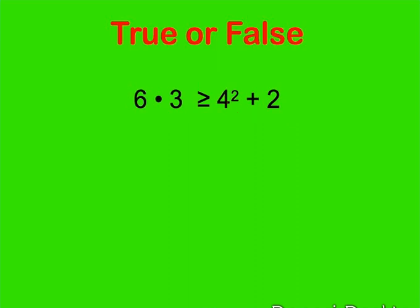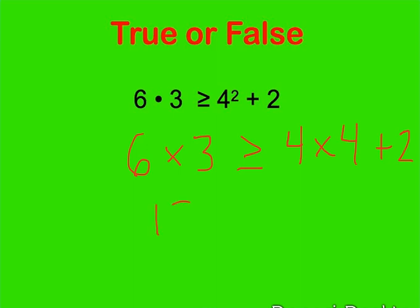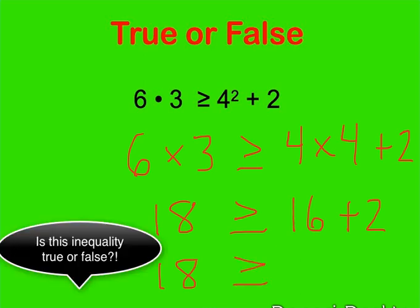On the left side we have 6 times 3 — that little dot means multiply. On the right side we have 4 to the second power, which means 4 times 4, plus 2. So 6 times 3 is 18, and 4 times 4 is 16, plus 2. That gives us 18 is greater than or equal to 18.